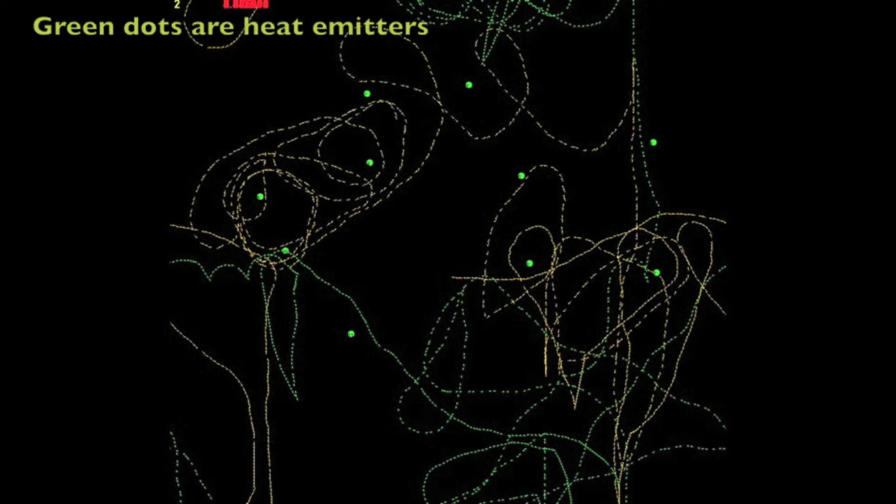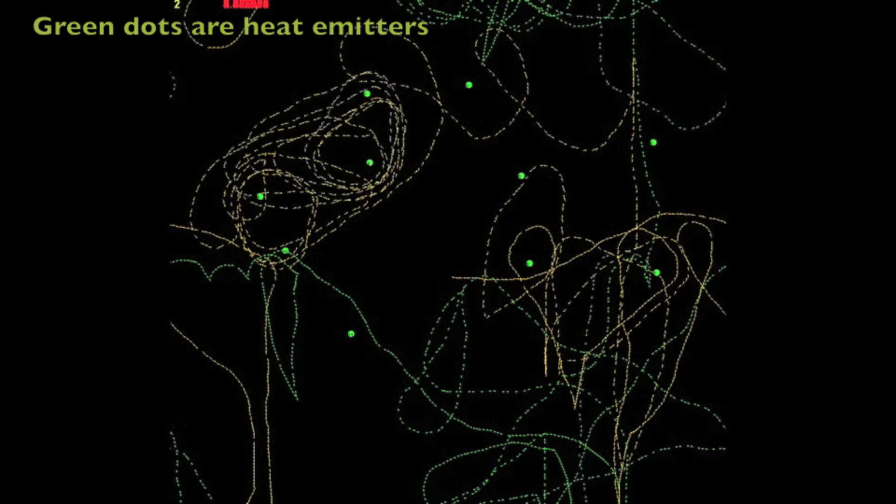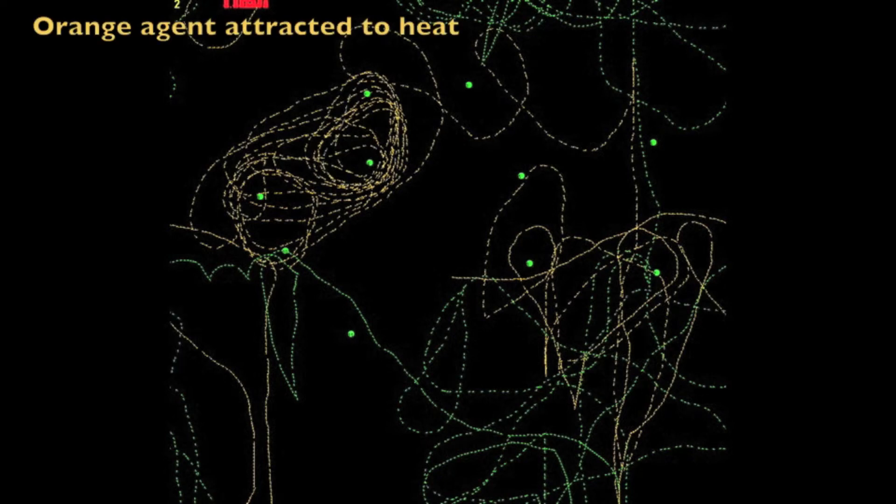The orange agent, they are attracted to the heat emitters. Those are the green dots you see on screen.